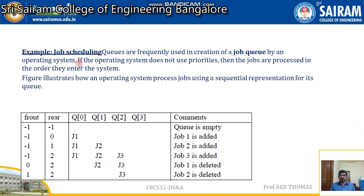Now think that the system has completed one job — job one has completed. That has to be deleted from the front end. When we delete it from the front end, front has to change its value from minus one to zero. When the second job is completed and deleted from the queue, the front end changes from zero to one. So we have inserted three jobs and deleted two jobs — front is going to be one and rear is going to be two.